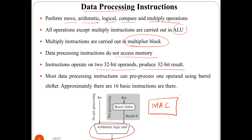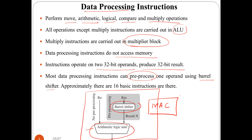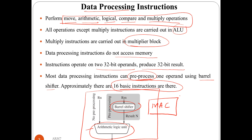Data processing instructions produce a 32-bit result which is normally stored inside another register. Most data processing instructions can pre-process one operand using the barrel shifter. As we can see in the architecture, there is an ALU unit and a barrel shifter, so we can pre-process operands before they go into the ALU. There are approximately 16 basic instructions available in data processing, related to move, arithmetic, logical, compare, and multiply.